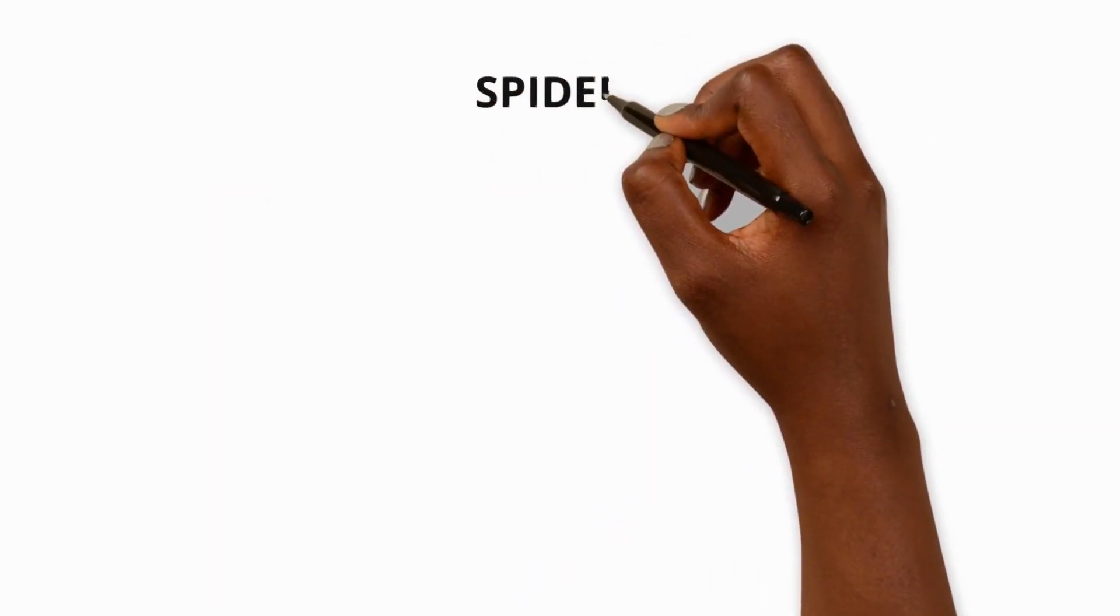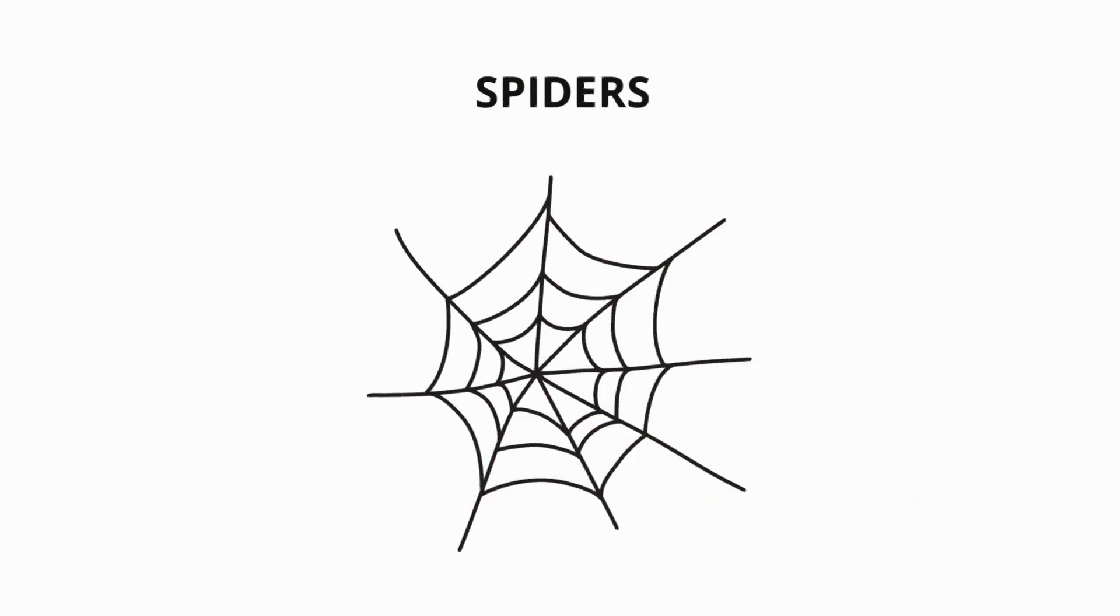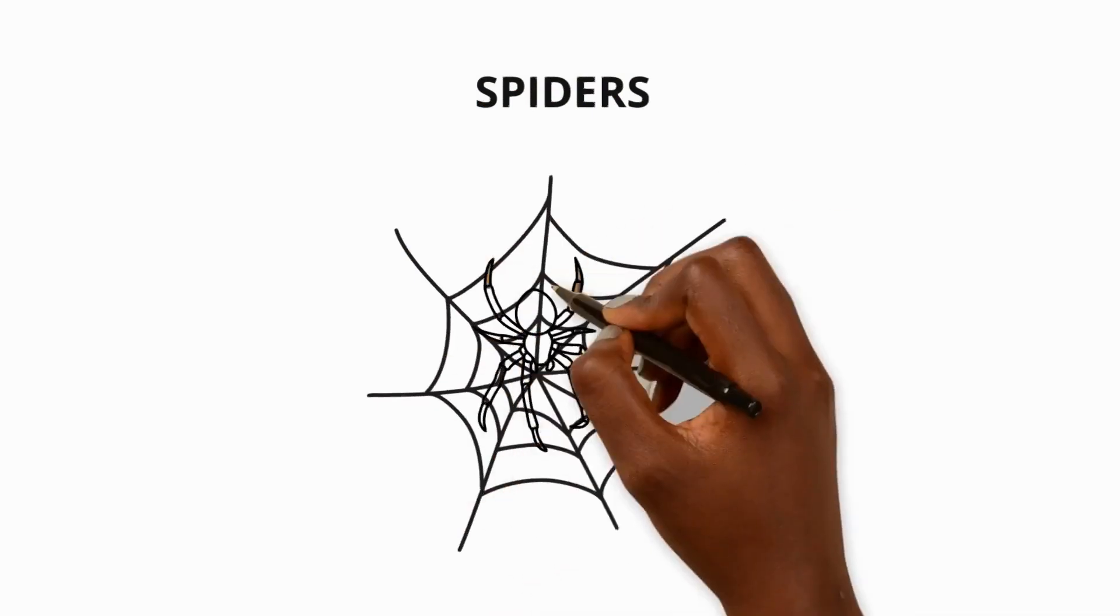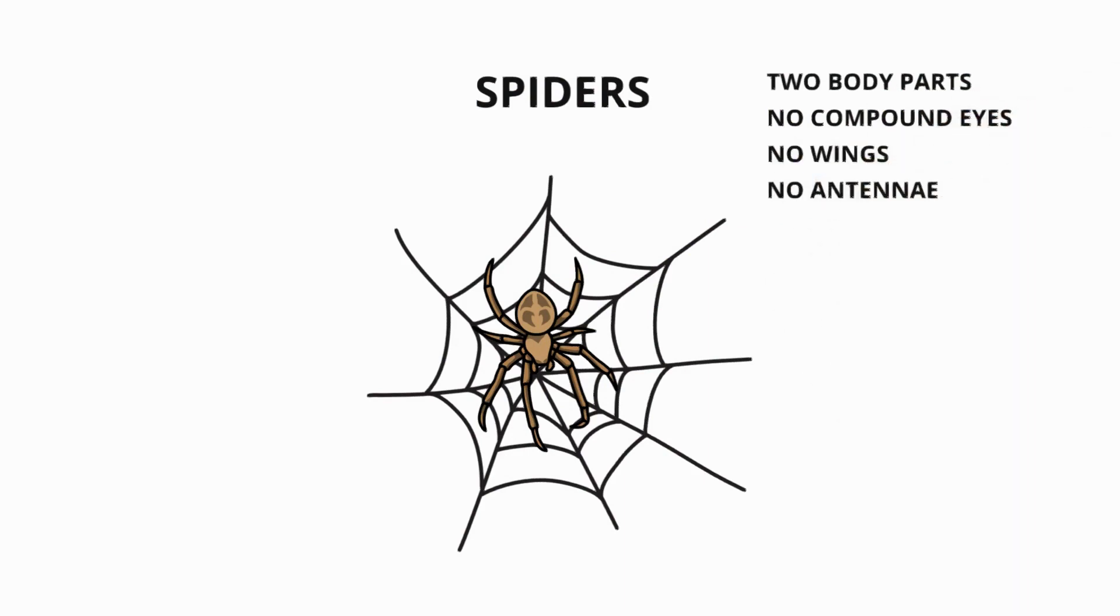Not to be confused with spiders. These are invertebrates with two body parts, eight legs and no compound eyes, wings or antennae. They can produce silk and use it to spin webs and make cocoons for their eggs.